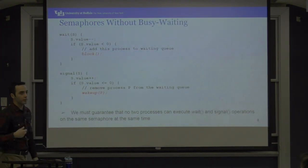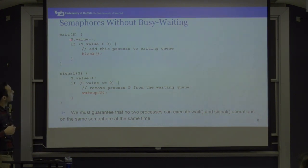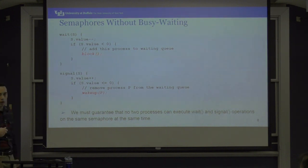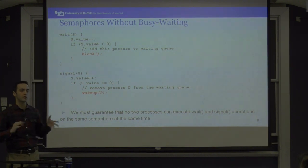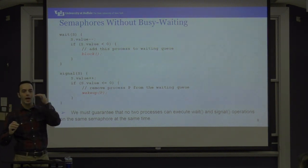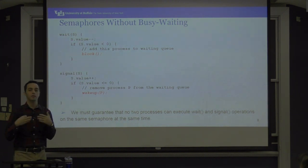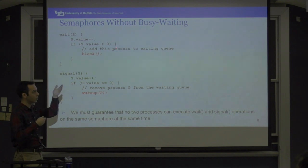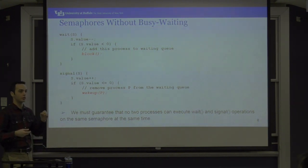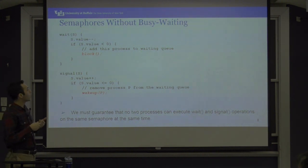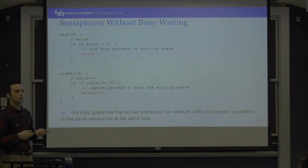Without busy waiting, the implementation is a bit different. The value is decremented, and if it has been put to a negative number, the thread will now block. The idea is: when you semaphore down, if the semaphore is not available — if the integer is not positive and by decrementing you go into the negative — then the resource is not available. So the thread should wait and block. It does not busy wait, but actually blocks the thread from getting scheduled.